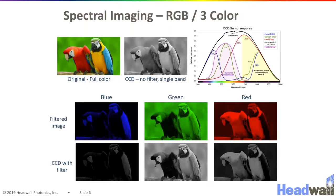One way to get a grasp of hyperspectral imaging is to compare it to a more common or more well-known imaging technique. A simple RGB imager that everybody has on their camera phone collects an RGB image as we are all accustomed to seeing. So if you break down what that sensor is actually doing: